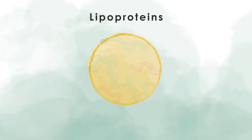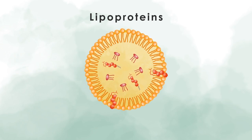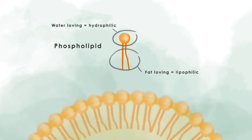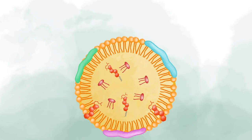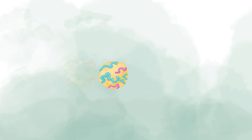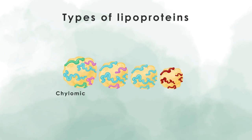Lipoproteins are spherical particles that have a core of neutral lipids and cholesterol esters, surrounded by a single layer of phospholipids. Phospholipids have a fat-loving side that faces the inside of the sphere, and a water-loving head group that faces the water-based bloodstream. There are also proteins called apolipoproteins embedded in the phospholipid layer.